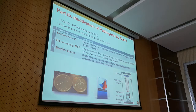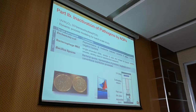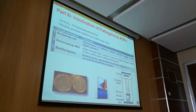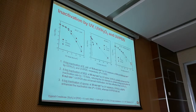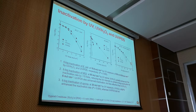Moving on to applying these two AOPs for disinfection, we chose three different microorganisms: E. coli as a representative bacterium, bacteriophage MS2 to represent a virus, and bacillus spores to represent protozoa. We then applied UV-H2O2 or UV-Persulfate for their inactivation.